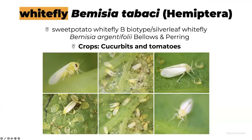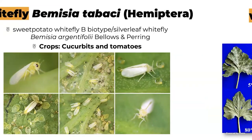The sweet potato whitefly has several different species; the most common one we deal with is Bemisia tabaci. The vegetable crops most affected are cucurbits and tomatoes, but you can find these insects in many other crops, even in your garden.